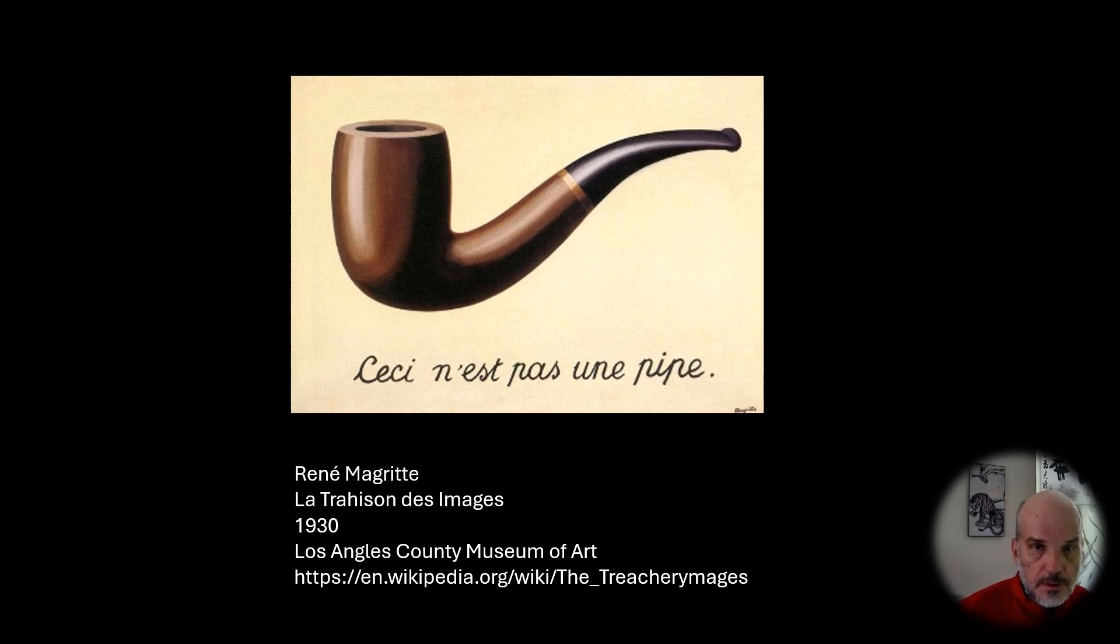Maybe the photograph is more closely related to the pipe than the painting though. A photograph is an image automatically created by the thing itself without interpretation by the artist. Maybe the artist adds something. Maybe there's a feel to the pipe or a scratch that's important or something about the pipe that makes the painting more the thing than the photograph.